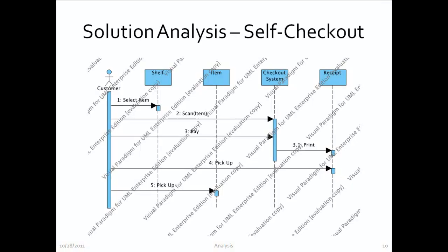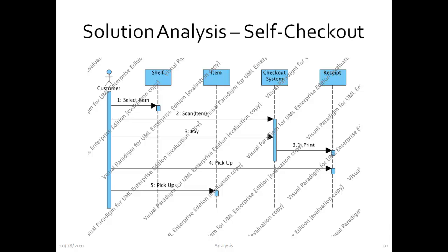Here is an example of solution analysis: we are planning to replace an existing manual checkout system with a self-checkout system. Note the depth of analysis — we only show interactions at the level of the system interface. The system here is the checkout system box. There is also a corresponding object or class model showing only objects exchanged or visible at the interface: item, shelf, and receipt.